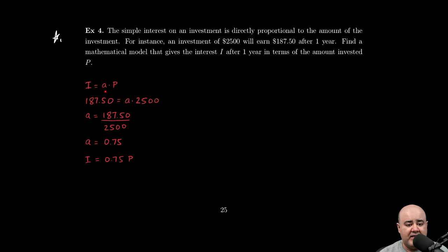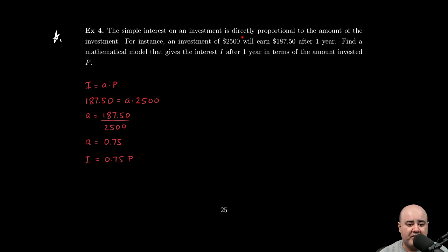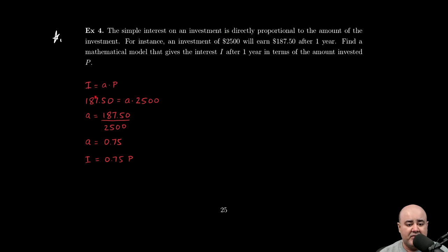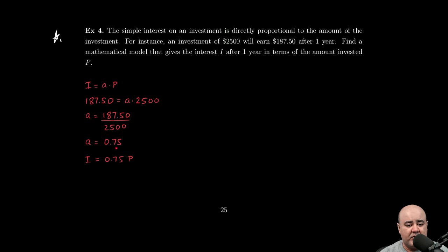We start with our equation I equals a times P, because we're told that there is direct proportionality or direct variation. We just plug in the numbers where they go. So I is $187.50, a is the constant of variation we don't know, and that's what we're looking for, multiplied by $2500. Solving for a, we divide $187.50 by 2500, and if you plug this into your machine, you get a equals 0.75.